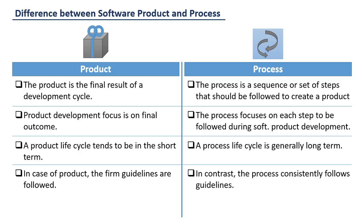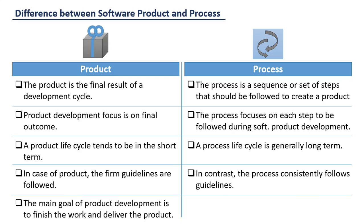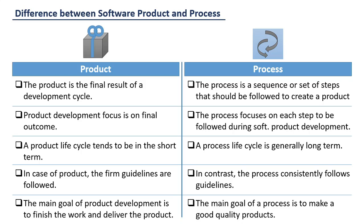In contrast, the process consistently follows guidelines. The main goal of product development is to finish the work and get the product delivered successfully, while the main goal of a process is to make a good quality product.